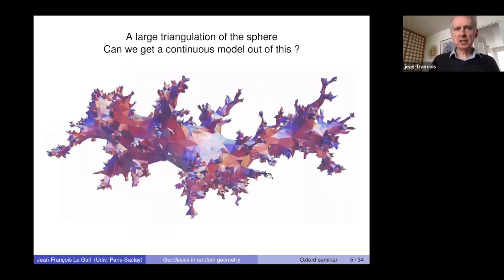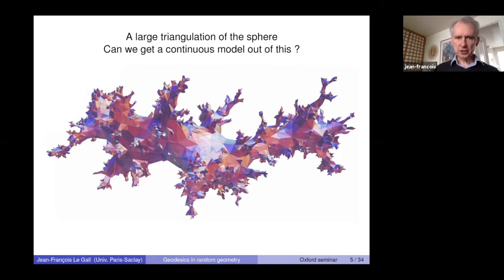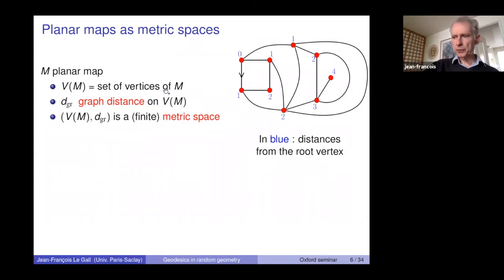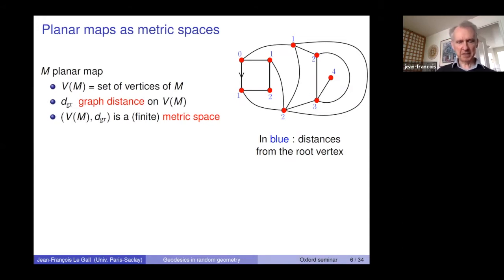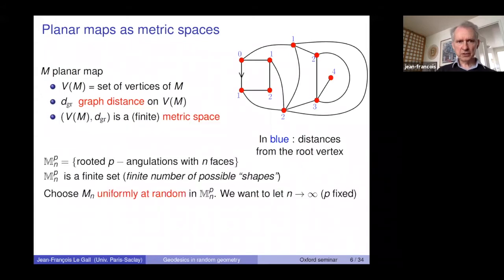Here is an example of a large triangulation of the sphere — not actually drawn on the sphere, but drawn in space by Mathematica in such a way that all edges are approximately the same length. You can already see that a typical triangulation of the sphere has a kind of fractal structure. This is what you expect when you take a typical large planar map. As I said, we are going to view planar maps as metric spaces. If you have a planar map M, you look at the vertex set V(M) equipped with a graph distance, giving a finite metric space. The idea is to let the size of the planar map tend to infinity.